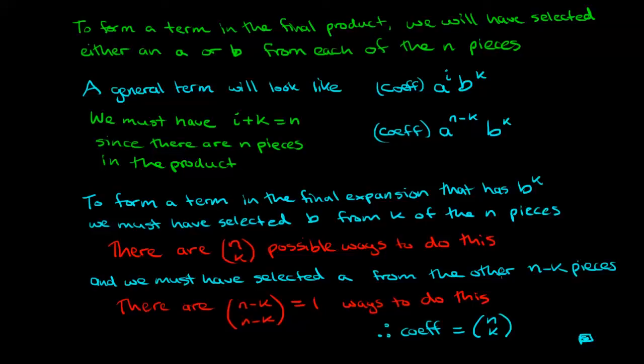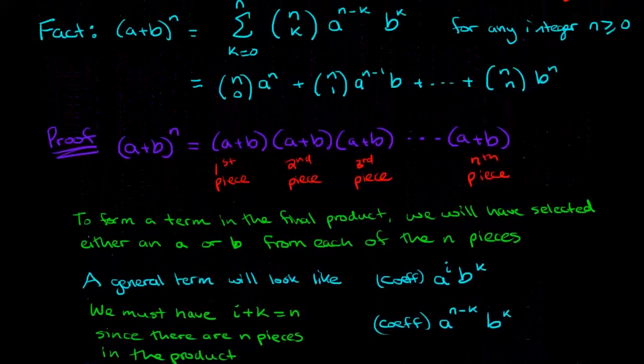So to recap we know that a generic term will look like a coefficient which we now know to be n choose k times a to the power of n minus k times b to the k, and that's a generic term and we have to look at all the possible terms that we would have gotten and sum them all up and that's how we get this expansion right here.